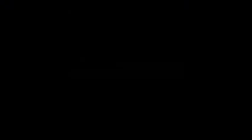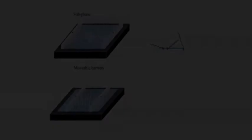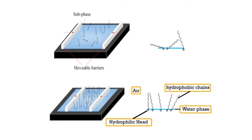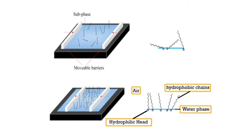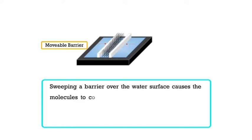Now let's study the lipid monolayers. Lipid monolayers are formed spontaneously at an air-water interface. This is due to the amphiphilic nature of the lipids. When lipids are dissolved in a non-aqueous volatile solvent and introduced onto a polar liquid surface, the solvent will evaporate, leaving the lipid molecules oriented at the liquid-gas interface. The polar head groups pull the molecule into the bulk of the water and the hydrophobic chains are oriented into the air. Sweeping a barrier over the water surface causes the molecules to come closer together and eventually form a compressed and ordered monolayer, much like forcing together balls on a billiard or pool table.